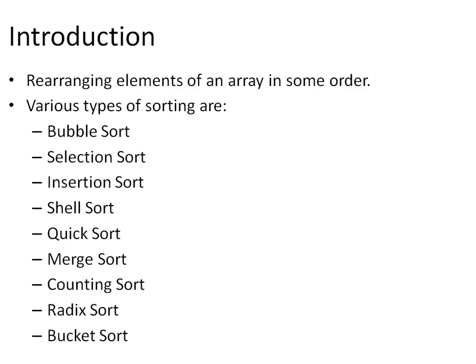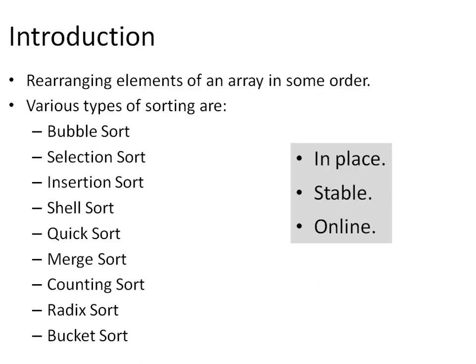There are a few things which are required to be discussed, and they are: in-place, stable, and online. By in-place sorting algorithm we mean if an algorithm is using the same space to store the output where the input sequence was stored, by means of overwriting — that is an in-place sorting algorithm.